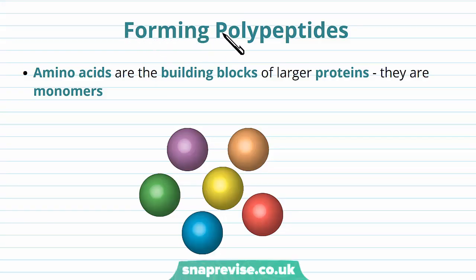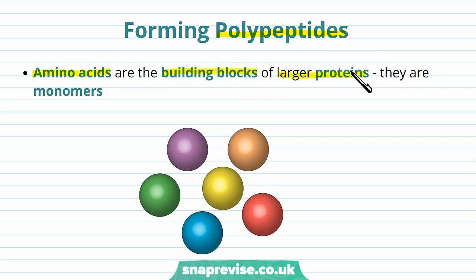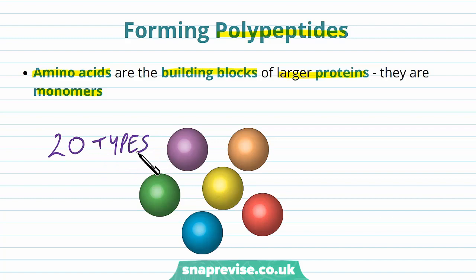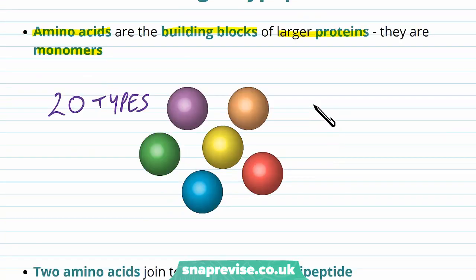We need to know how we form polypeptides. We've already said previously that amino acids are the building blocks, or the monomers, of larger proteins. Remember there are 20 different types of amino acid, and as these join up together they'll form a protein.